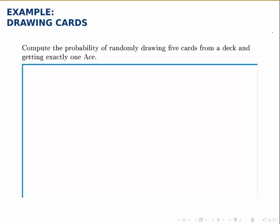Compute the probability of randomly drawing five cards from a deck and getting exactly one ace. So if we're doing the probability of getting exactly one ace, we need to count the number of ways that we could get exactly one ace, and I keep emphasizing exactly because that's important and we'll come back to that.